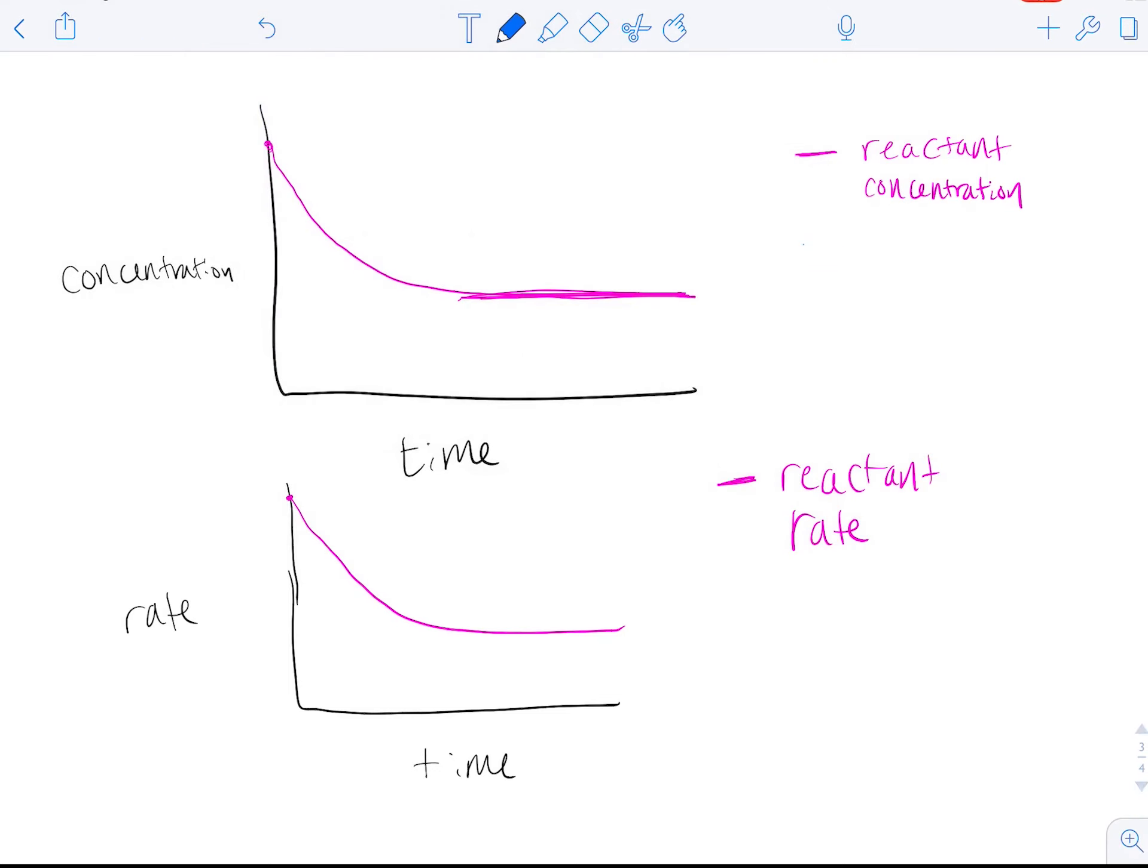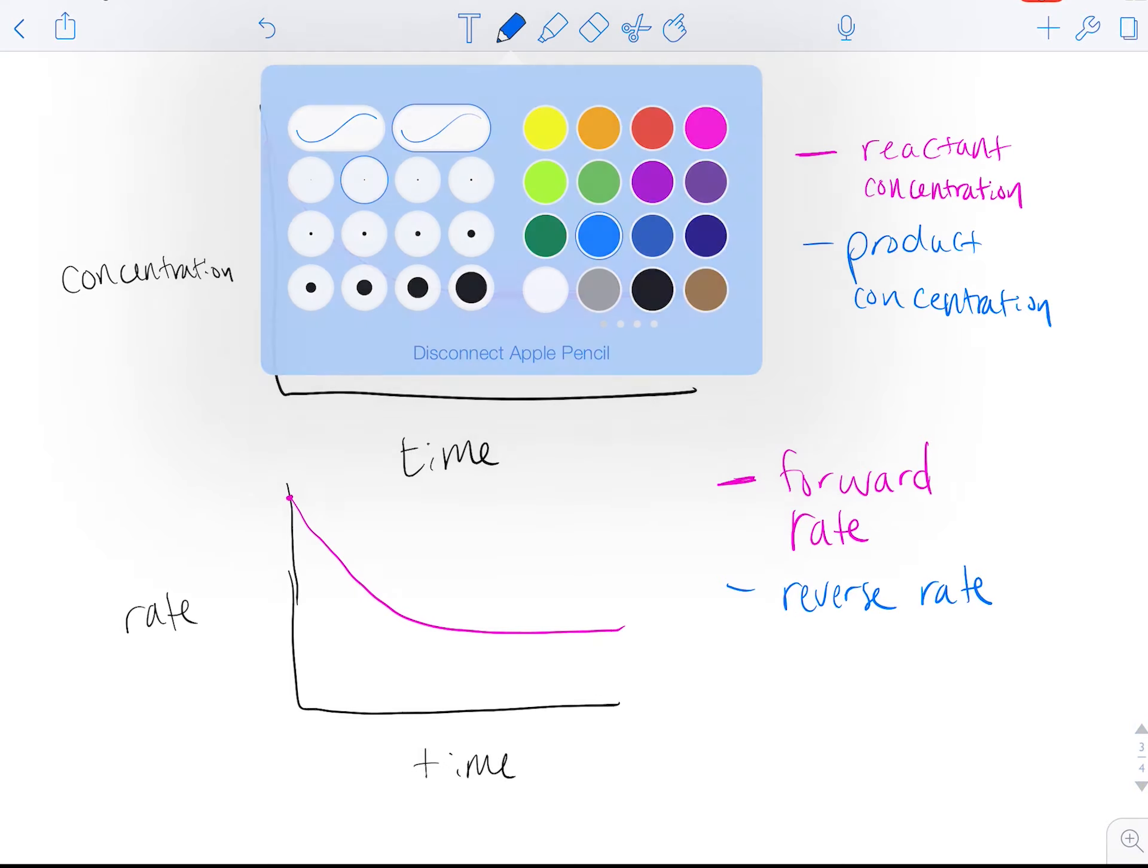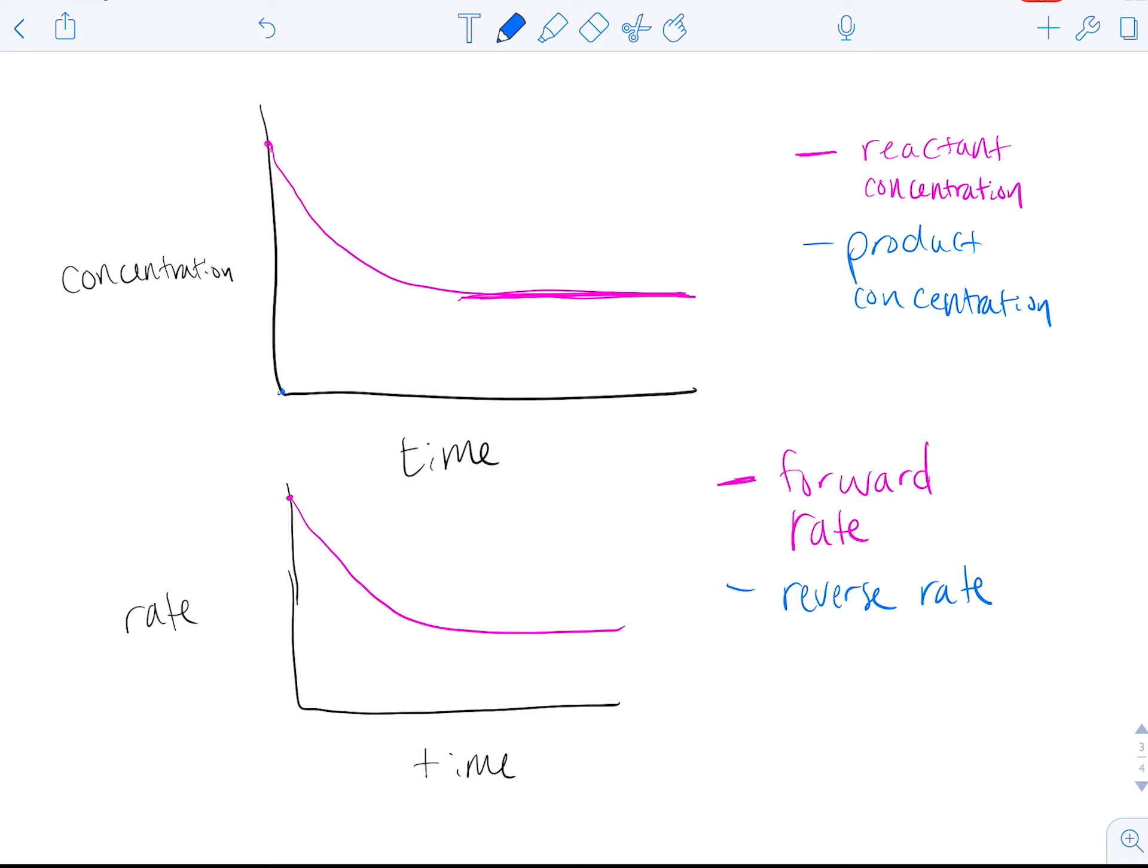We're going to do the same thing for product. Now we have product concentration and product rate. I'm actually going to put this as forward rate, the rate of the forward reaction, and reverse rate, the rate of the reverse reaction. So at the beginning, we start with zero product concentration, and it goes up until it levels out. Again, it's not going to be equal to the reactant concentration, but it will level out at the same point of time that our reactant concentration levels out.